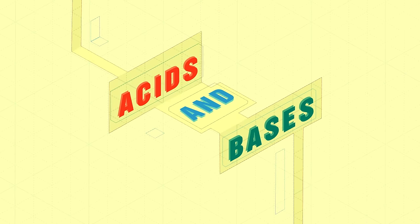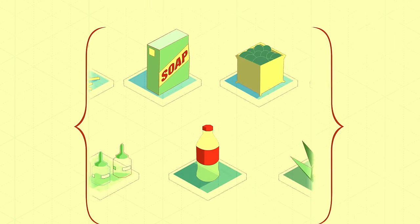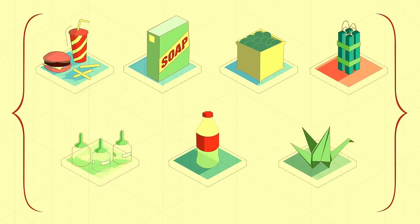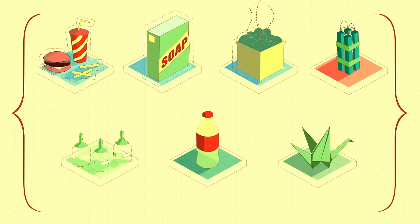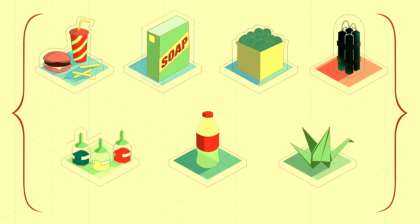Acids and bases are everywhere. They're used to make foods, soaps and detergents, fertilizers, explosives, dyes, plastics, pesticides, even paper.